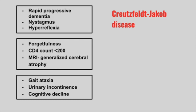Next is a patient with forgetfulness. The CD4 count is less than 200 and the MRI is showing generalized cerebral atrophy. This is HIV-associated dementia.